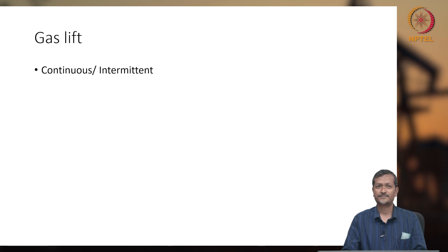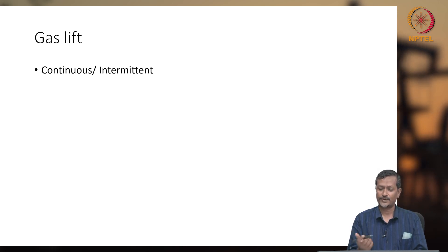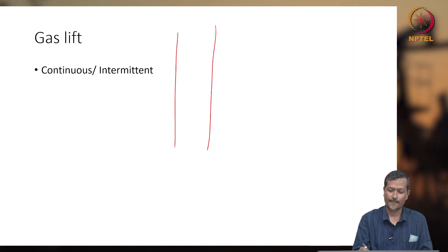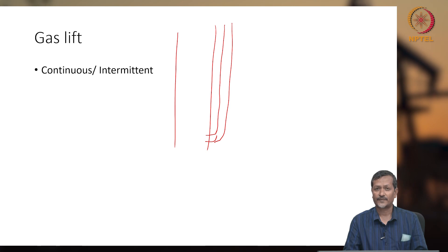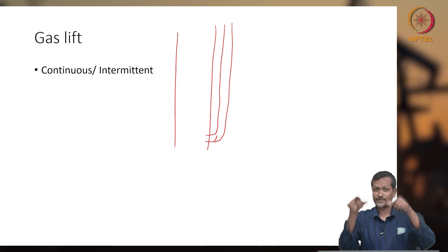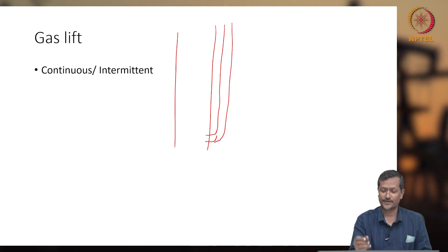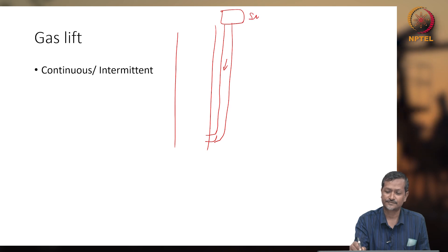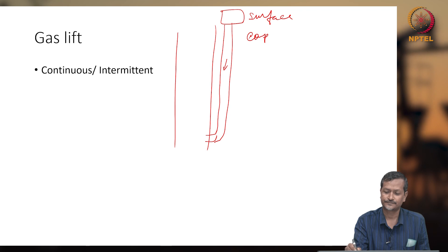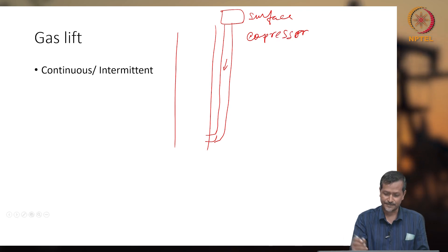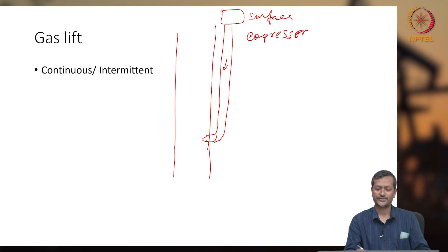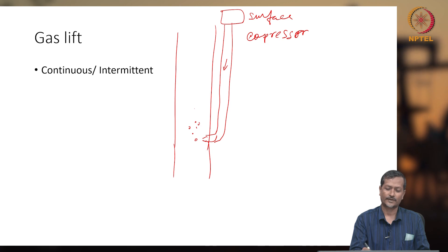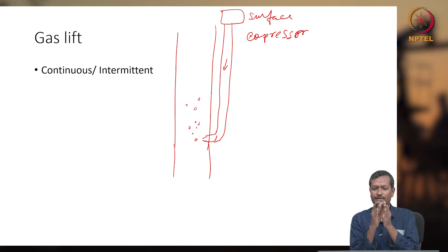Gas lift system: there are two types — continuous and intermittent. In the continuous type, there is tubing with a valve, and gas is injected from the surface via a compressor. The annular space between tubing and casing provides the injection path. A nozzle creates small bubbles. When reservoir pressure is depleted, injecting small bubbles through the nozzle helps reduce hydrostatic pressure.